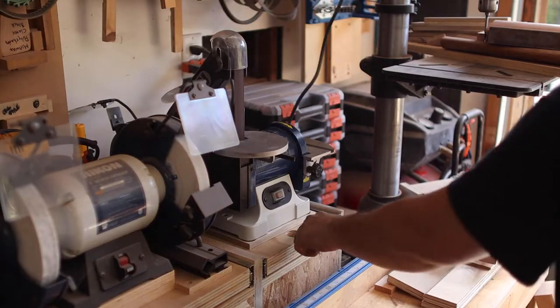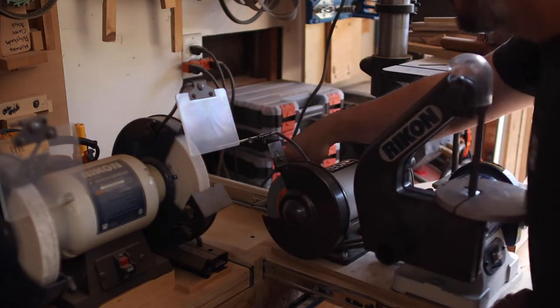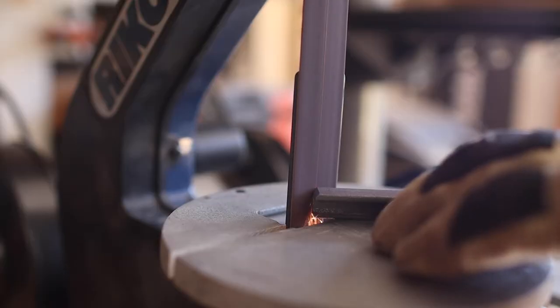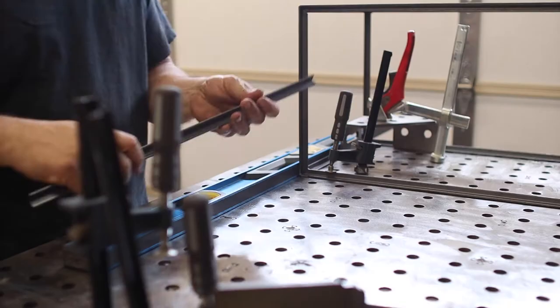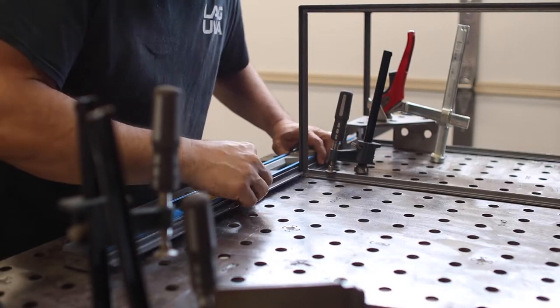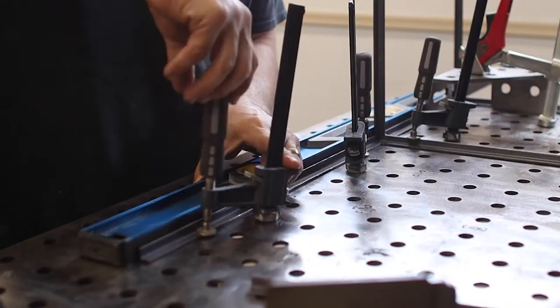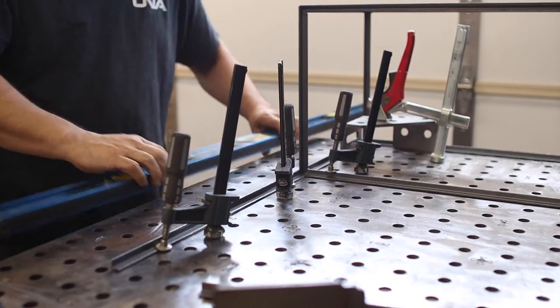I almost forgot to bevel the edges of these other pieces and this time I used my little Rikon belt grinder. Be sure to check out my grinder storage drawer video if you haven't seen it yet. I also took advantage of the magnetic edge on the level to help with the alignment, and then I could clamp it down and tack it and then finish out the welds.